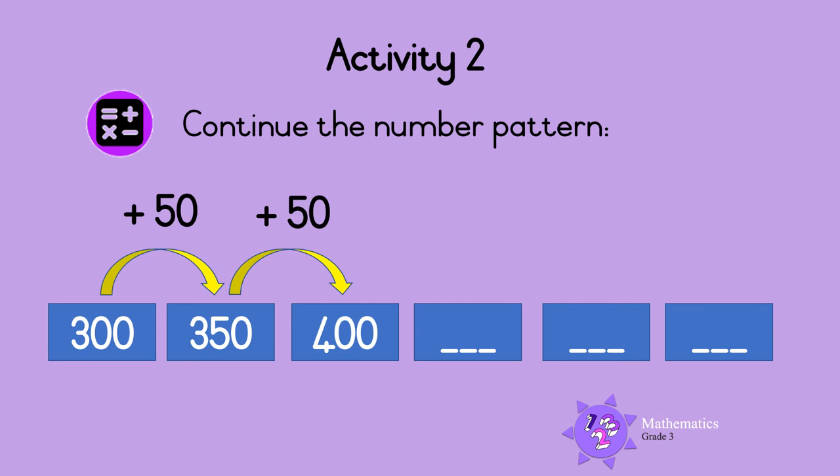The pattern must continue in the same way, so to get the next number we add 50 to 400 to get 450. Then we add another 50 to 450 and we get 500, and lastly we add 50 to 500 to get 550. Great!